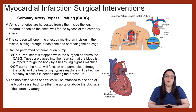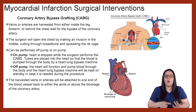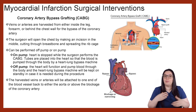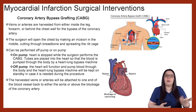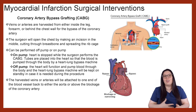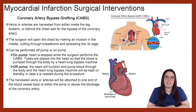The harvested veins and arteries are attached to a blood vessel back to either the aorta or above the blockage in the coronary artery. Once it has been determined that the grafts look good and the patient is stable, if they were on pump, the pump is turned off and checked for any bleeding. Then the rib cage and chest are closed up and a dressing is placed over the incision. The patient then goes to the cardiovascular ICU or open heart ICU to recover.